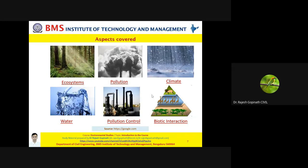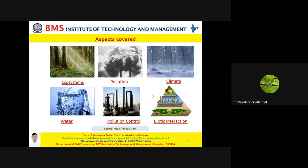Environmental studies encompasses ecosystems - forest, desert, grassland at micro scale, and terrestrial and aquatic ecosystems at macro scale, including freshwater and marine ecosystems. It's not just ecosystems, and not just natural resources such as water, wind, soil, and wildlife. It's also about interactions between wildlife, interactions between human beings and the natural world, climate, and weather. And in engineering, we also speak about pollution. When you have interactions and relationships, there are impacts - the negative impacts are pollution. So how do you go about controlling pollution?